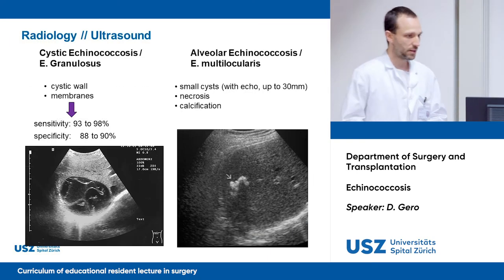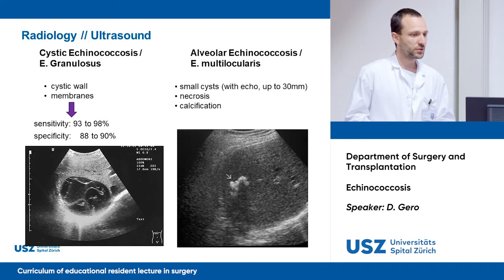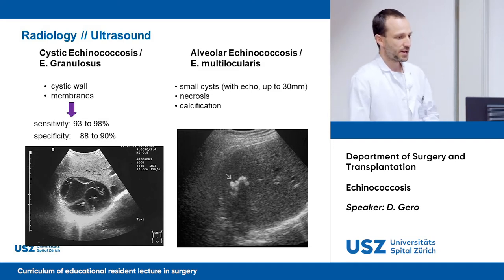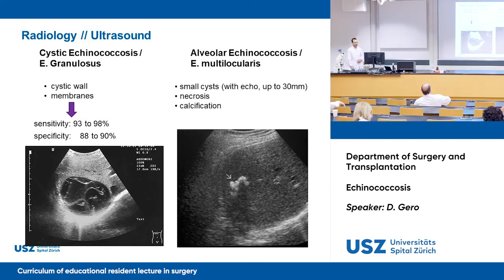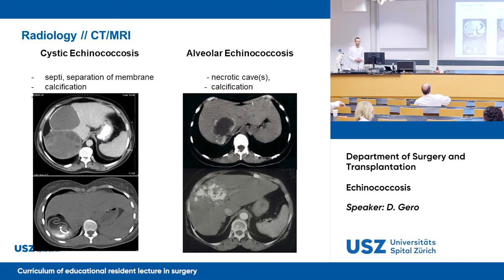We can then move on to ultrasound. For cystic echinococcosis, we may identify cystic lesions with a wall and membranes, which are very sensitive and specific to this disease. For alveolar echinococcosis, we can find small cysts, signs of necrosis, or calcification. It is recommended to perform a CT or MRI: for cystic echinococcosis this will identify septation and calcification, and for alveolar echinococcosis, necrotic caves or calcification.